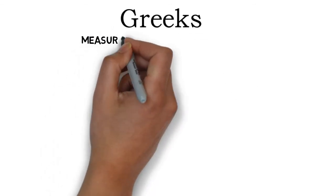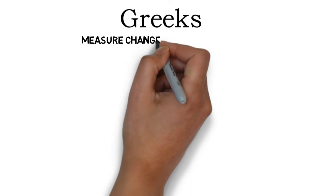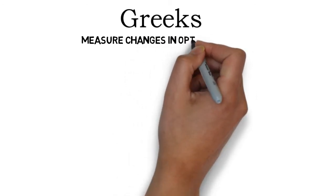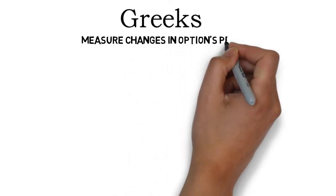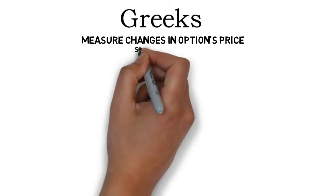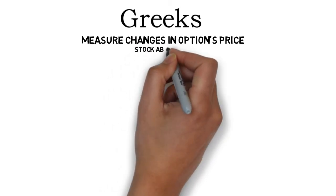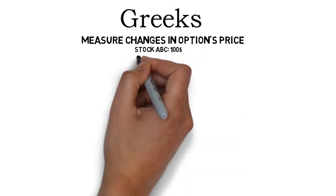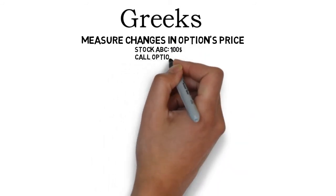Now let us get into option Greeks. Greeks measure changes in the option's price that occur after changes in the different factors that define intrinsic and extrinsic value. I will now present the most important option Greeks. To explain them easily I will use an example for every Greek. For all these examples you can assume that the underlying stock ABC is trading at $100 and the call option is initially worth $10.